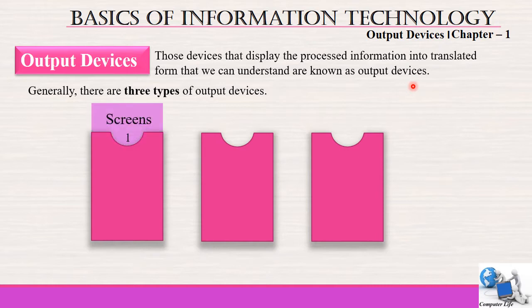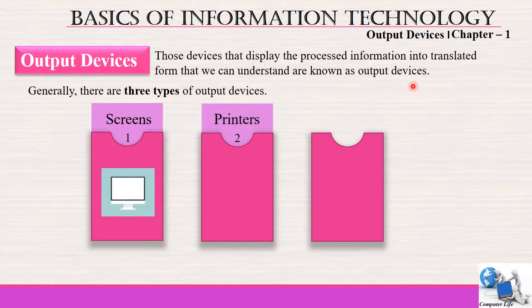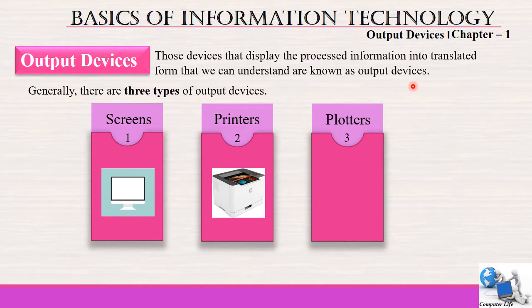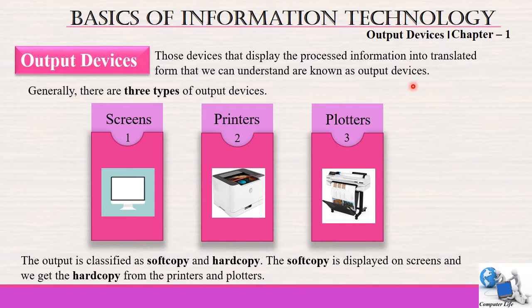Generally there are three types of output devices. The first one is screens, the next is printers, and the last is plotters. The output is classified as soft copy and hard copy. Soft copy is displayed on screens and we get hard copy from printers and plotters.